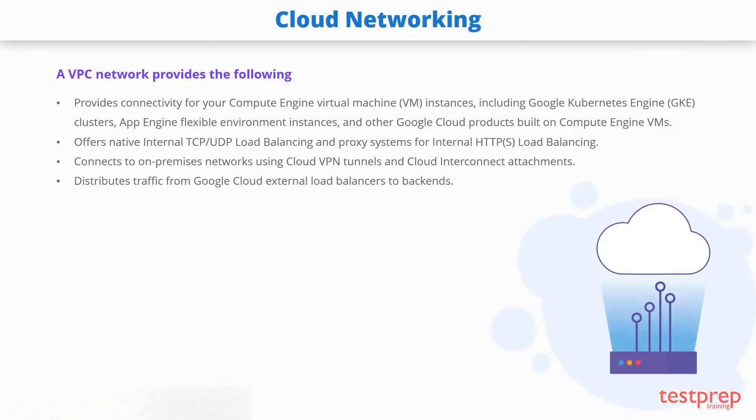A VPC network provides connectivity for your Compute Engine virtual machine instances, including Google Kubernetes Engine clusters, App Engine flexible environment instances, and other Google Cloud products built on Compute Engine VMs. VPC offers native internal TCP, UDP load balancing, and proxy systems for internal HTTPS load balancing.